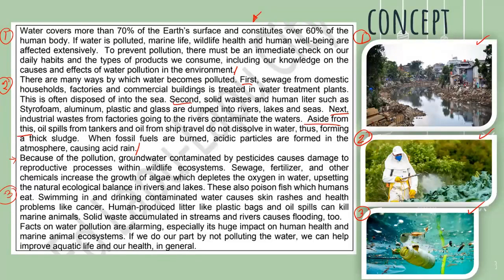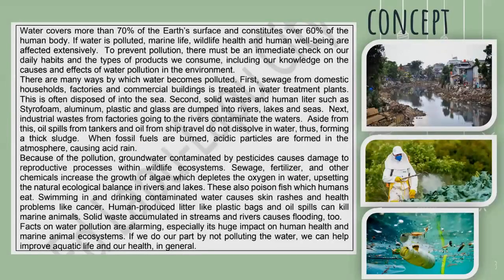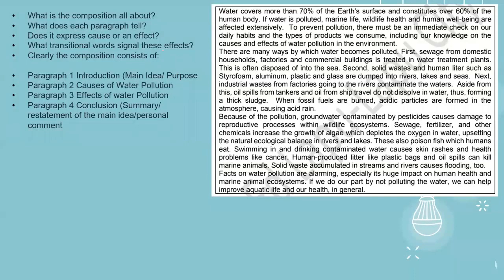Let's answer the first question: why are the pictures here? The pictures on the right — picture number one, picture number two, and picture number three — are relevant to the text because these are examples of how our water systems are polluted, such as putting garbage near bodies of water, using pesticides, and throwing garbage in water systems. We're going to analyze the text by answering the guide questions. What is the composition all about? Given the pictures and the paragraphs, it's clear that the text is about water pollution.